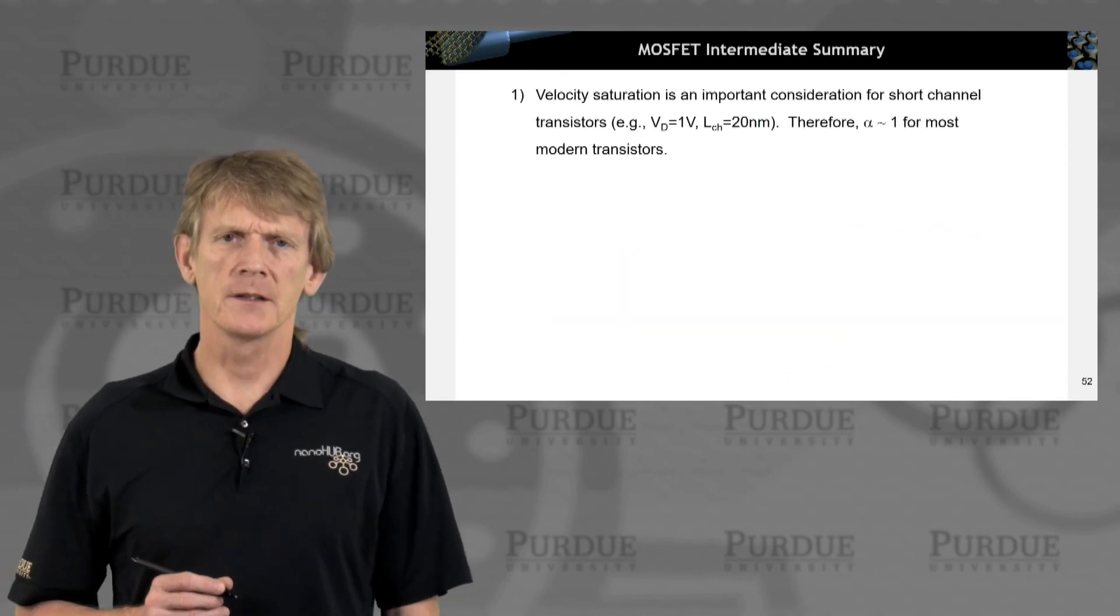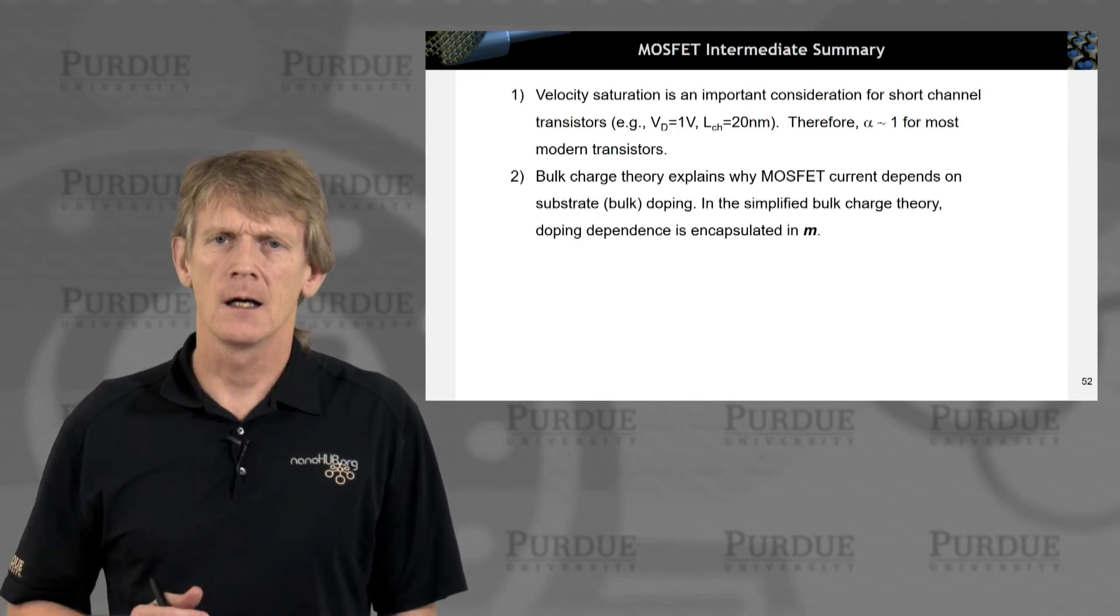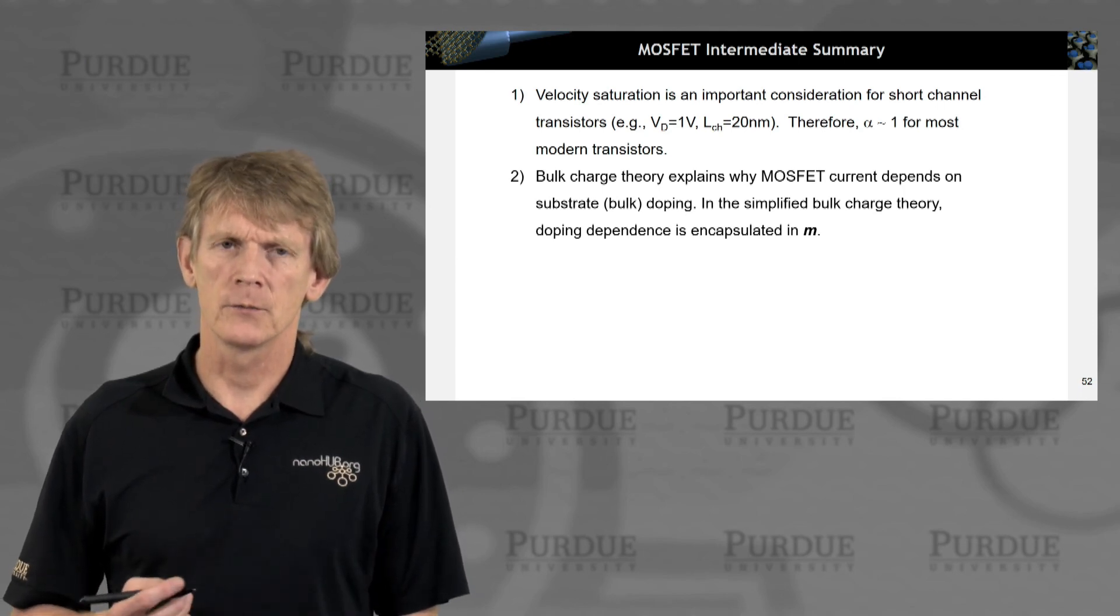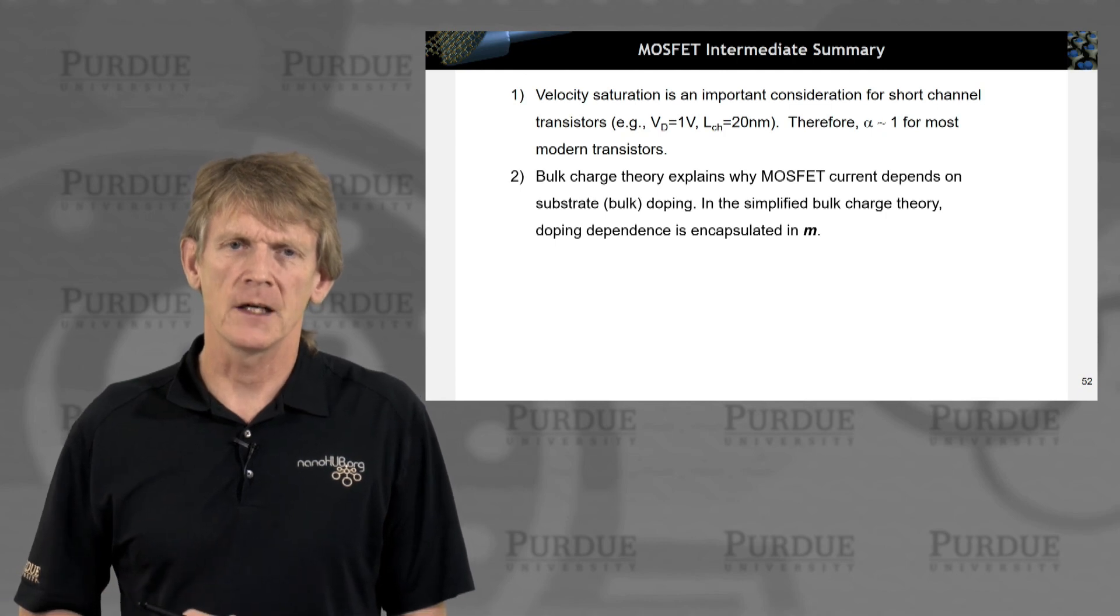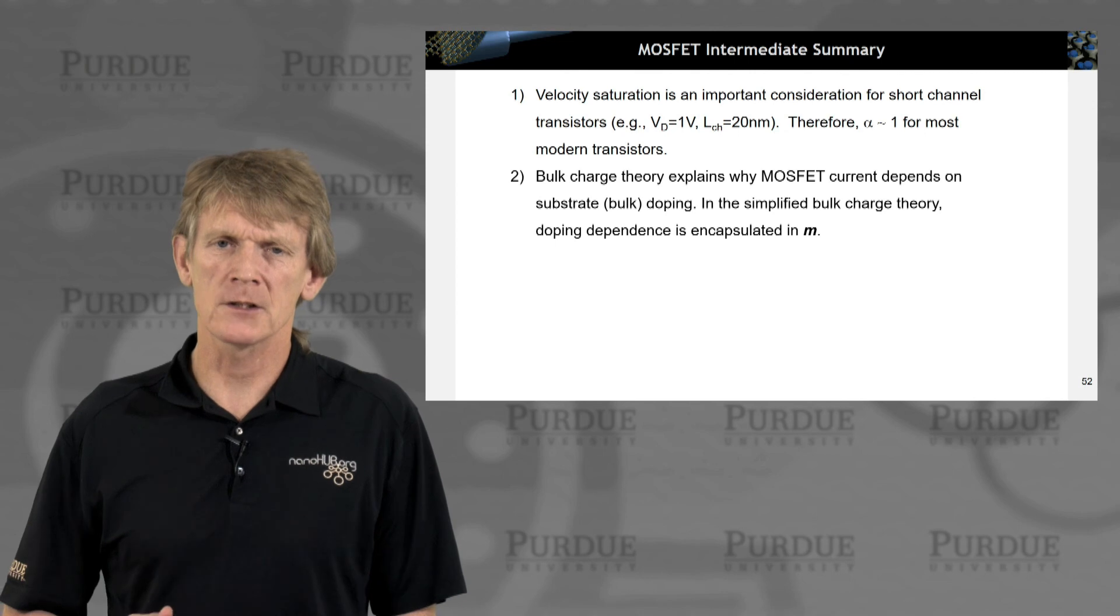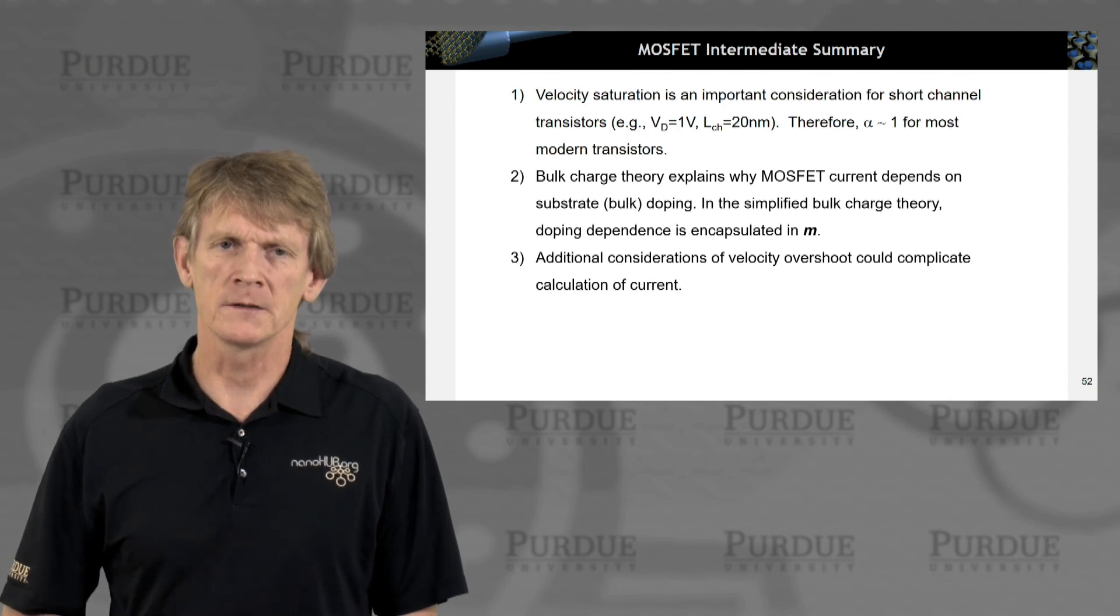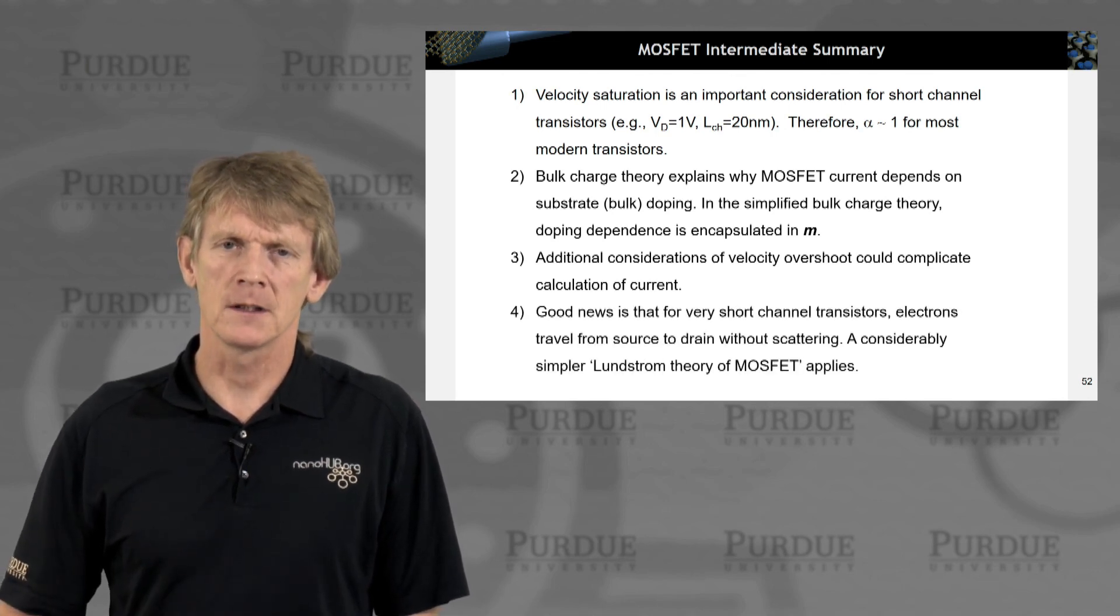So let me summarize for MOSFET that the velocity saturation is an important consideration, especially for shorter channels. The bulk charge theory really explains well the current depends on the substrate doping. You can lump a lot of the details into a parameter M that helps you understand the overall device characteristics and how these truly two-dimensional devices perform as a function of various gate biases. And if you have velocity overshoot and look at carriers at the nanoscale, these theories don't help you to get a quantitative answer. You still get a qualitative feel, but at the nanometer scale you'll have to do more. And this is here the comment that if you look at the Lundstrom theory of a MOSFET, where it's the top of a barrier analysis, you can get a long way at the nanoscale.